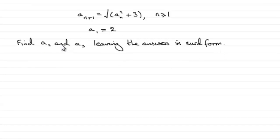So how do we get the next term in the sequence, a2? Well, very easy. All we need to do is let n equal 1, because when you put n equal to 1 here, you're going to get a1 add 1, so it's going to be a2.